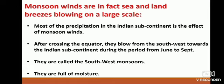After crossing the equator, these winds blow from the southwest towards the Indian subcontinent during the period from June to September. They are called the southwest monsoons and they are full of moisture. From September to December, because of the low pressure area developing near the equator, winds blow from the Indian subcontinent towards the equator. These are called the northeast monsoon winds and they are dry winds.